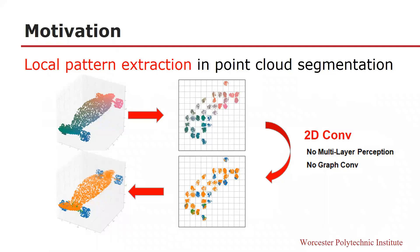In existing works, point-based methods extract point cloud features by applying multilayer perceptron followed by pooling layers, which are missing local pattern learning. Graph-based methods try to extract local patterns through graph convolution on k-layer neighborhood graphs, which however are complicated to train.